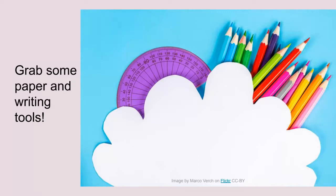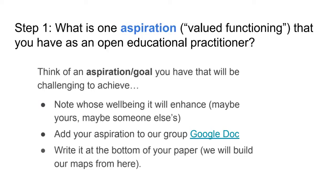If you are in a position to do so and want to join along, grab a piece of paper and some writing tools — ideally a full-size sheet or bigger. We're going to build our maps in four distinct steps. The first and key step is identifying an aspiration you have as an open educational practitioner.